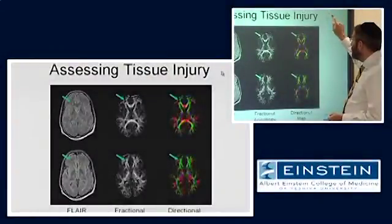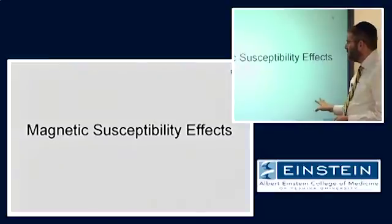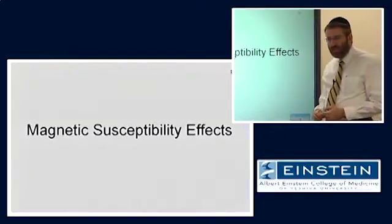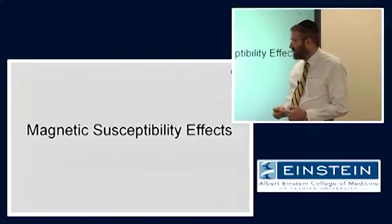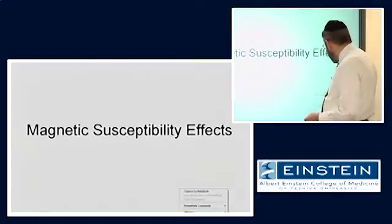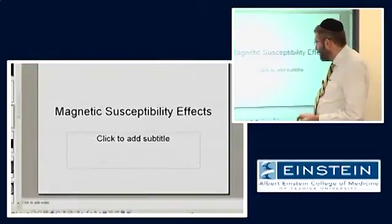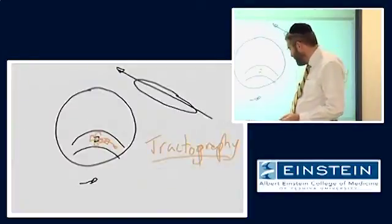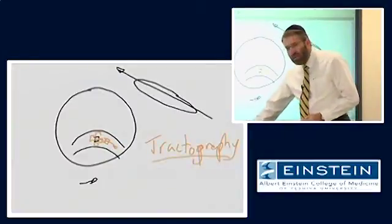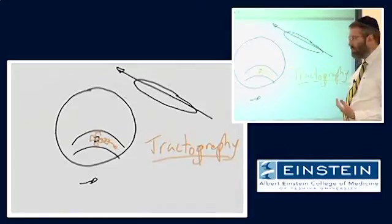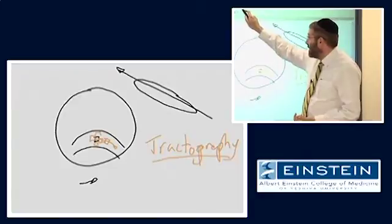The next thing that we are going to discuss is magnetic susceptibility. We've talked about this a little bit already in terms of artifacts, and I'm going to touch on that aspect of things again, but we're also going to talk about how we can use magnetic susceptibility to generate diagnostic information and do types of functional imaging, not just how does it create an artifact in our images.